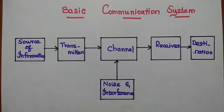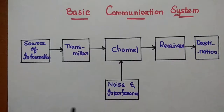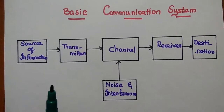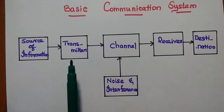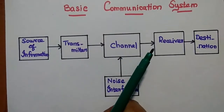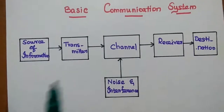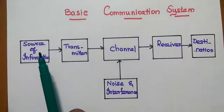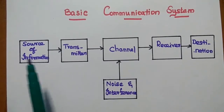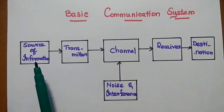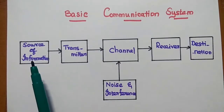This is the basic communication system diagram. It has three important blocks: one is the transmitter, another is the receiver, and in between we have the channel. The source of information is the part where we generate the signal — the message signal.